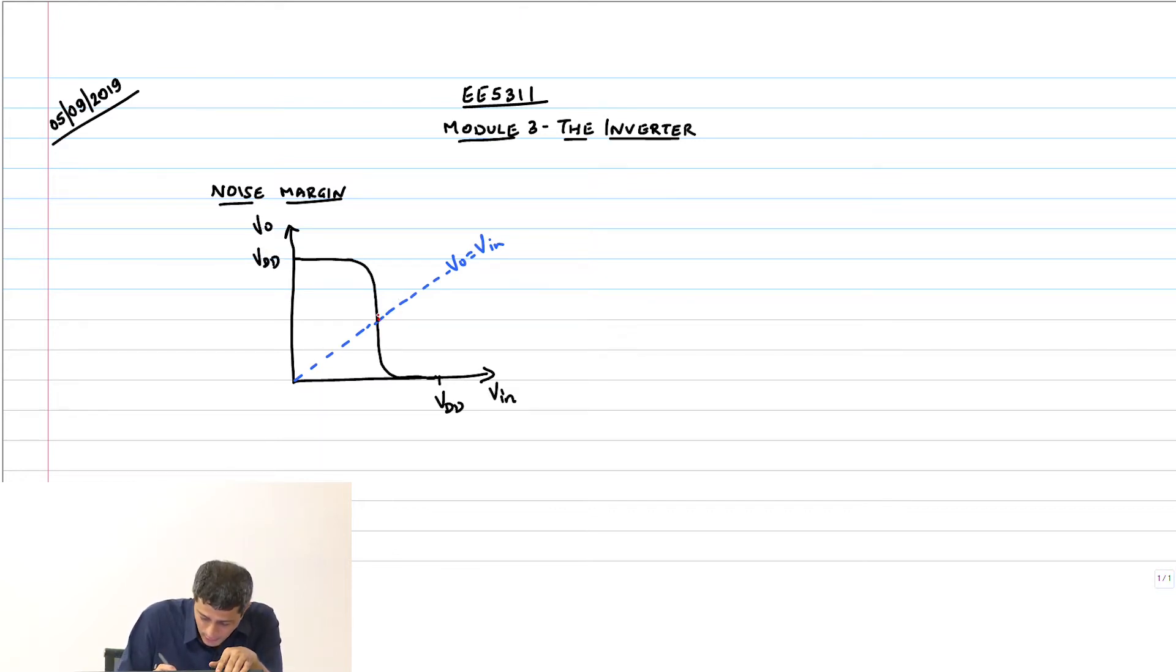The slope at this particular point was minus infinity. Therefore, we went ahead and derived the exact expressions for the noise margins and V_IL, V_IH and all that. This was V_IL, V_IH, and corresponding values V_OL, V_OH.